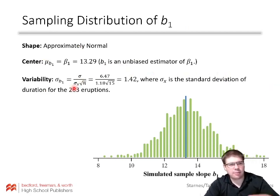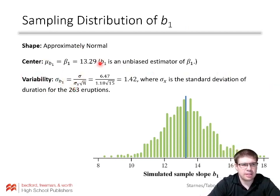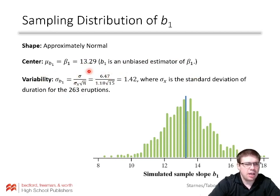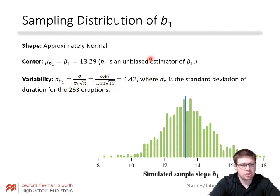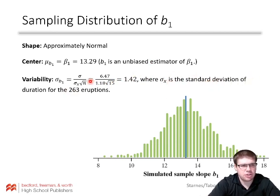For the spread, this shows up on your formula sheet. The standard deviation of the slope is equal to sigma — the true standard deviation of the residuals — divided by sigma sub x times the square root of n. You take the standard deviation of your x values and the sample size to get an actual standard deviation, where sigma sub x is the standard deviation of duration for the eruptions.